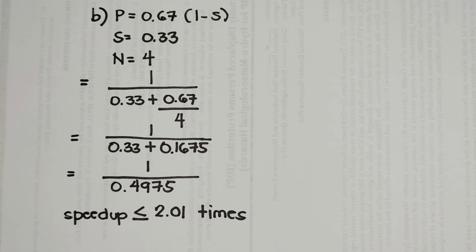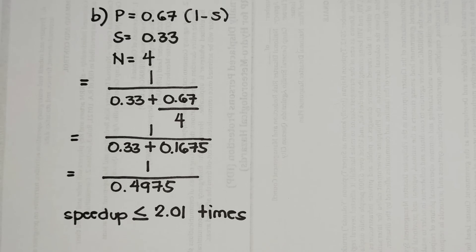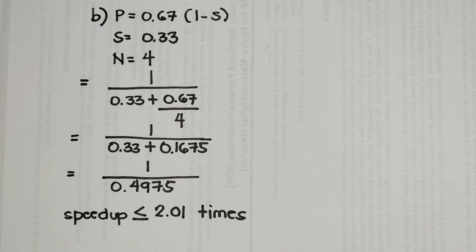I hope you've learned something from this lesson. Amdahl's Law lets you compute the maximum improvement of the system depending on how many processing cores you add and the ratio of parallel to serial operations — parallel operations should be greater than serial operations for best results. If you have any questions, please feel free to comment below, subscribe to my YouTube channel. Thank you very much, good day, and stay safe.